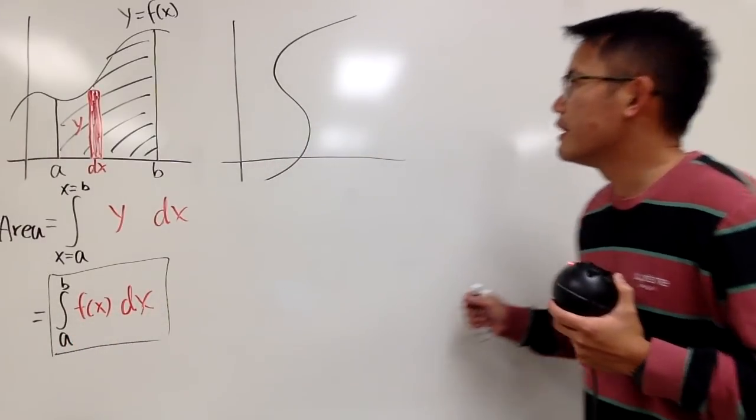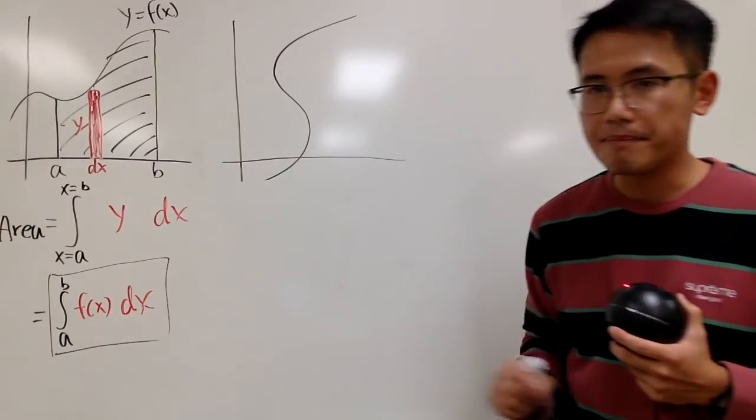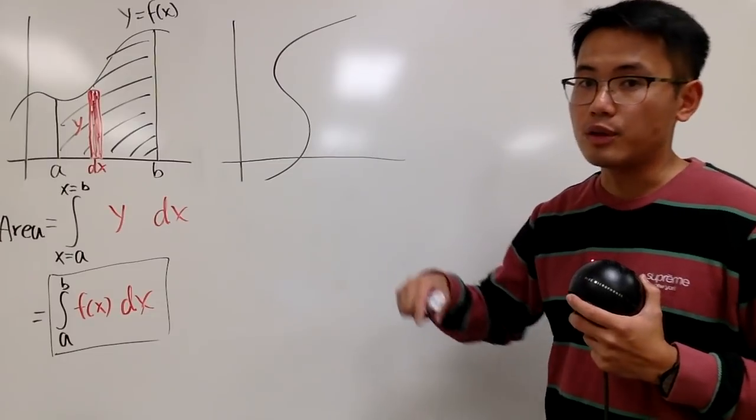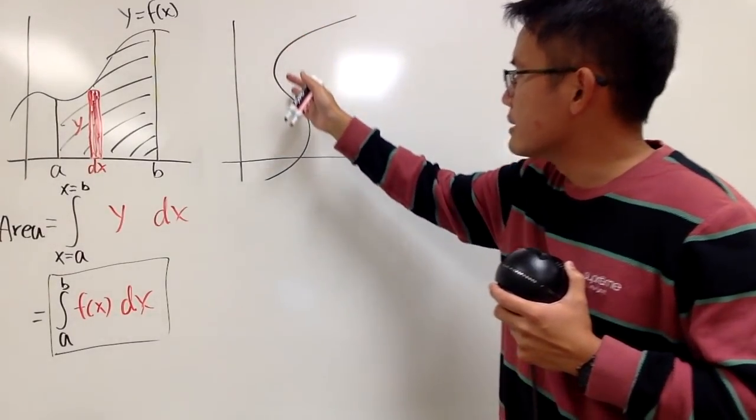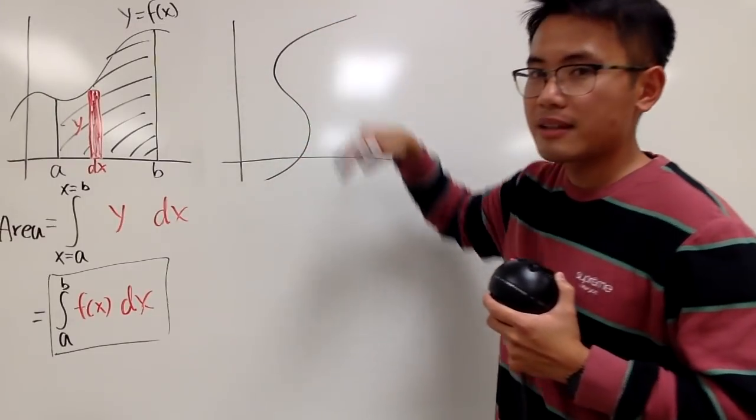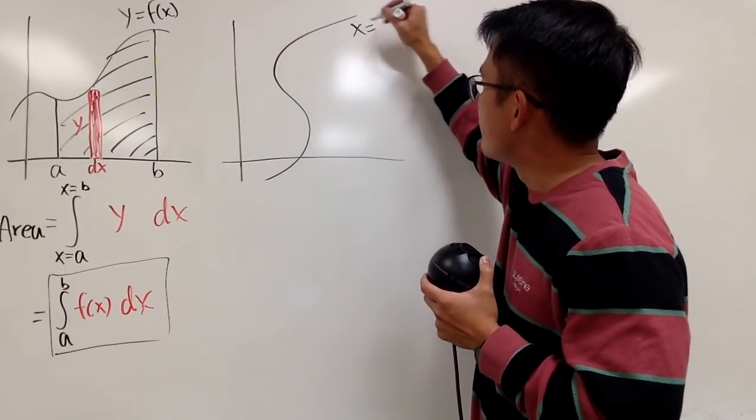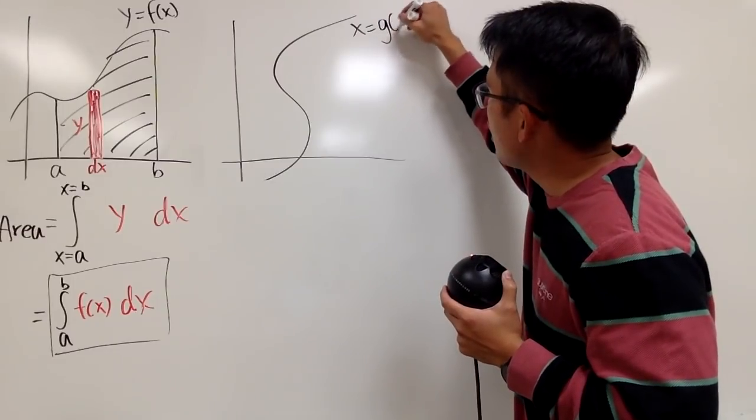All right, here is another situation. Maybe you have a curve like this. And for this time, this is not a situation where you have y as a function of x. This is the other way around. Why? Because as you can see, this curve does not pass the vertical line test. Well, it's okay. It does pass the horizontal line test. Maybe you are given that this is x as a function of y. And let's write it as x equals g of y.